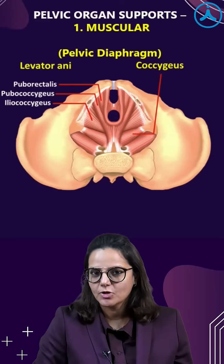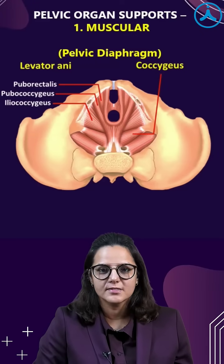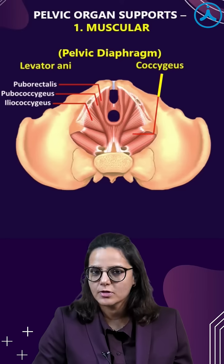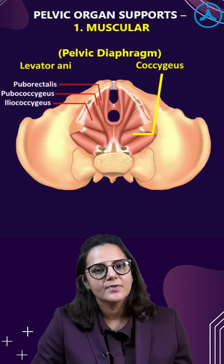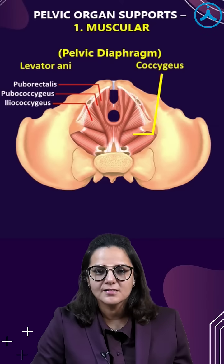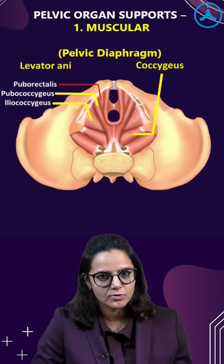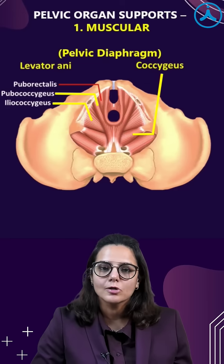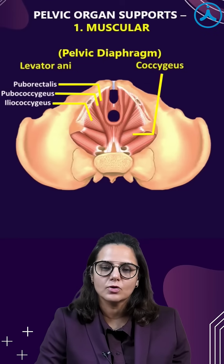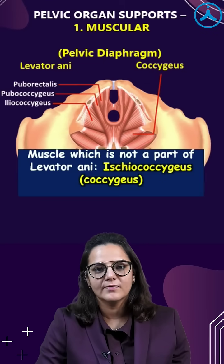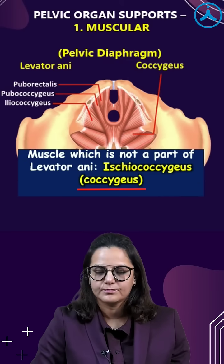Pelvic organ support can be muscular or ligamentous. The main muscle is the pelvic diaphragm, which consists of ischococcygeus (also known as coccygeus) and levator anii. Levator anii comprises three muscles: the iliococcygeus, the pubococcygeus, and the medial fibers of the pubococcygeus also known as puborectalis. The exam question — which fiber is not a part of the levator anii — the answer would be ischococcygeus or coccygeus.